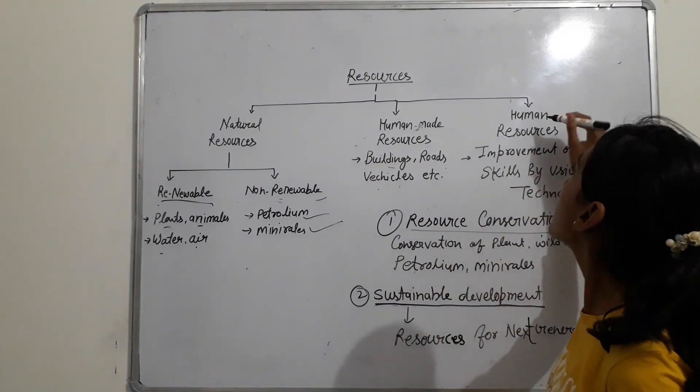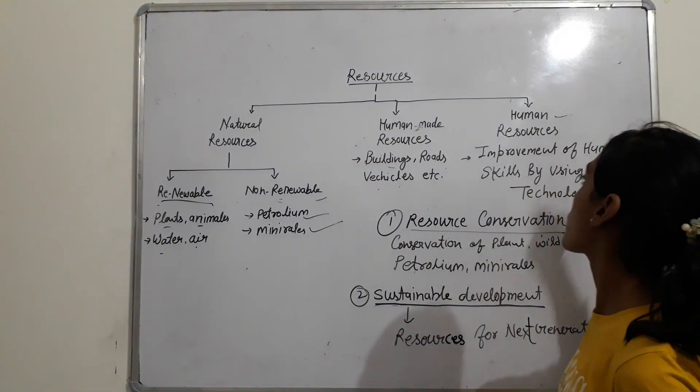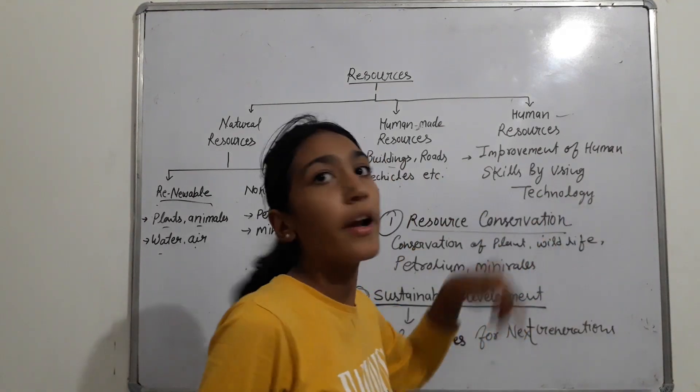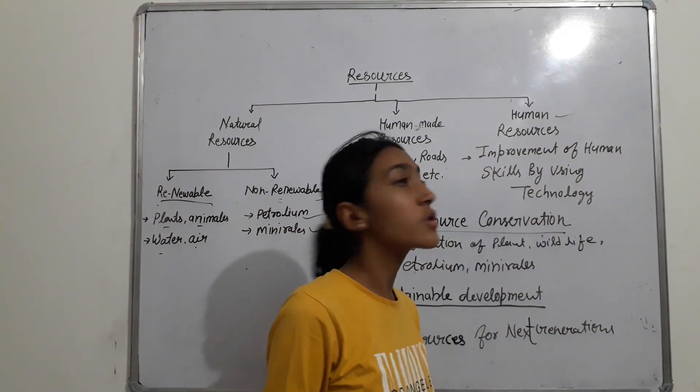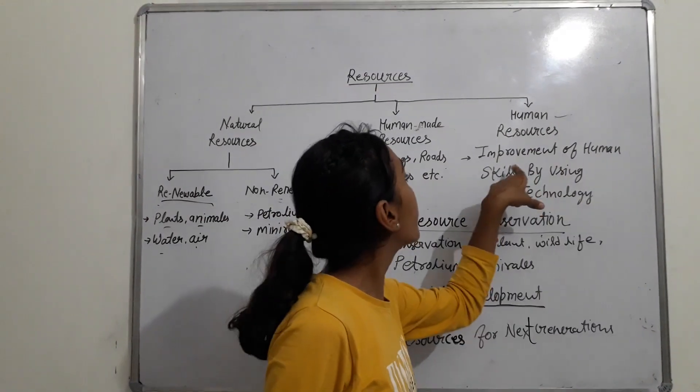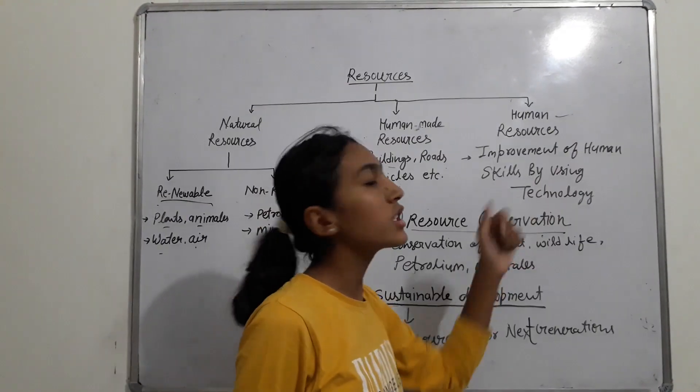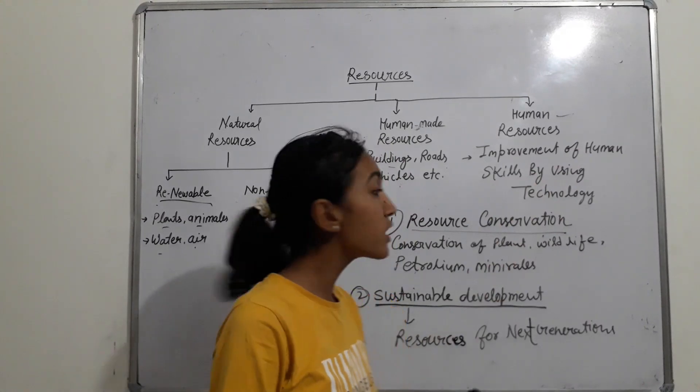The third type is human resource. The improvement of other resources depends upon human resources. Improvement of human skills is done by using technologies.